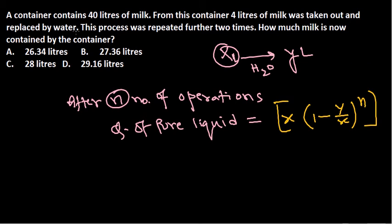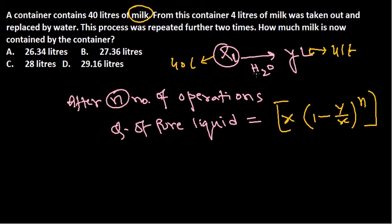In this case, the container contains 40 liters of milk, which is the pure liquid. From this container, 4 liters of milk was taken out and replaced by water. So the y amount is 4 liters, and the actual amount of milk x is 40 liters. The rest of the part is water. Now we need to calculate the number of operations.